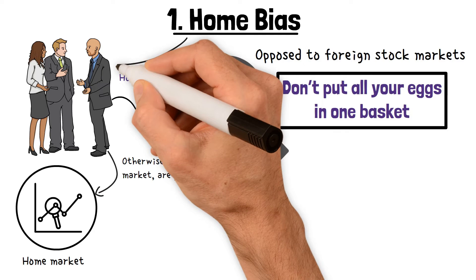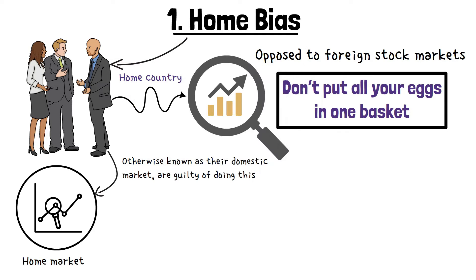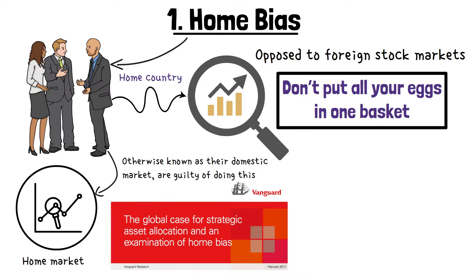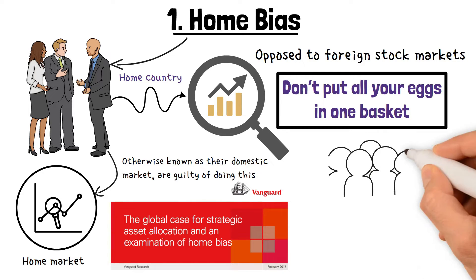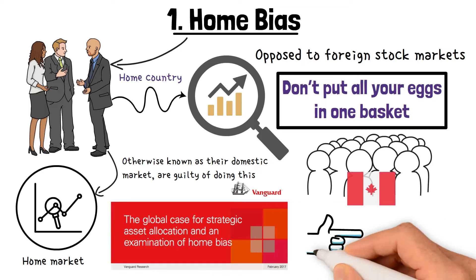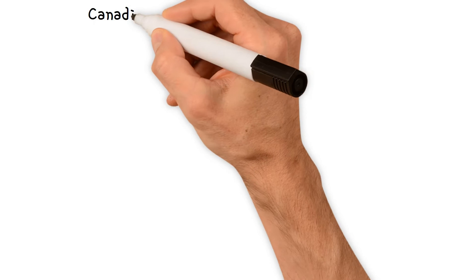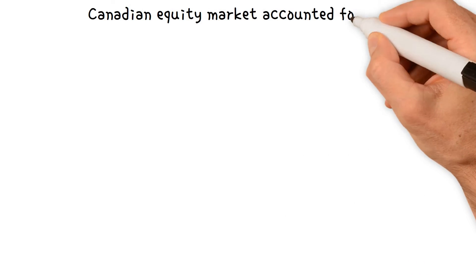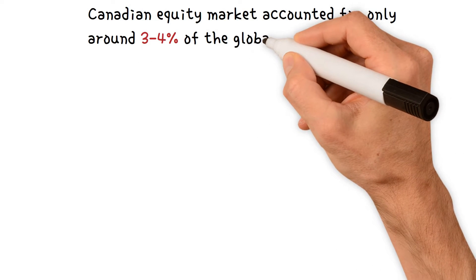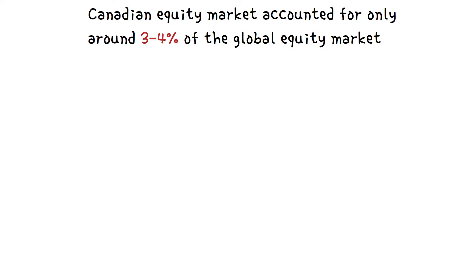Home bias affects many investors from around the globe. In a 2017 paper by Vanguard, entitled The Global Case for Strategic Asset Allocation and an Examination of Home Bias, the company reported that, on average, Canadian investors allocated 59% of their portfolios to their home market, despite the fact that the Canadian equity market accounted for only around 3-4% of the global equity market.